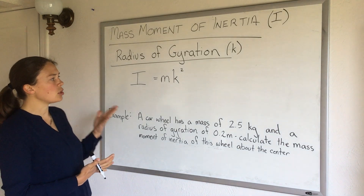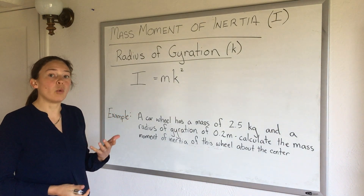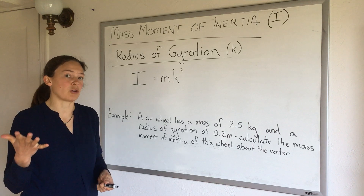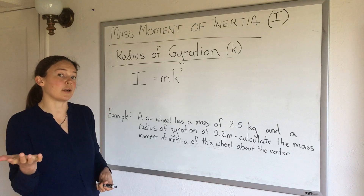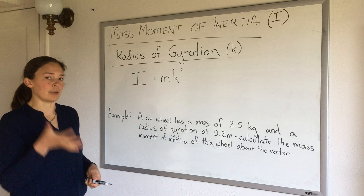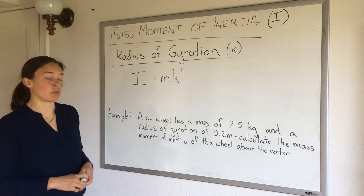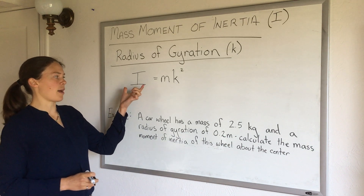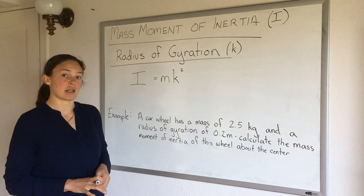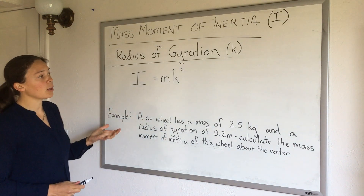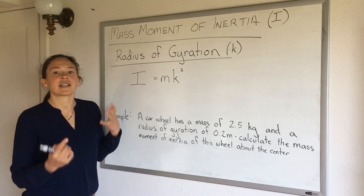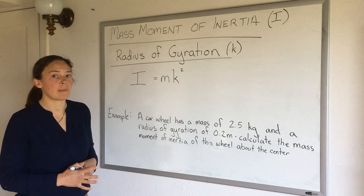We'll usually use this in two different ways. One is to calculate it after working through a complex shape, and then present the result — all that mass moment of inertia calculation — as a radius of gyration rather than as a mass moment of inertia directly. The other way is if we're given the radius of gyration and need to calculate the mass moment of inertia from it.